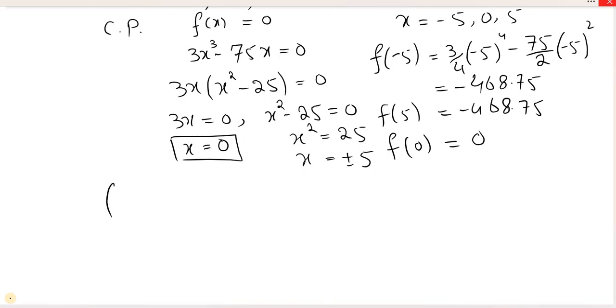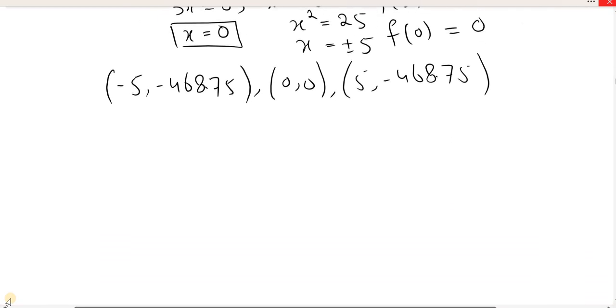And finally, if you put zero in the x place, then you have zero. Now, three locations are critical points: minus 5, minus 468.75; zero, zero; and 5, minus 468.75. Same point.